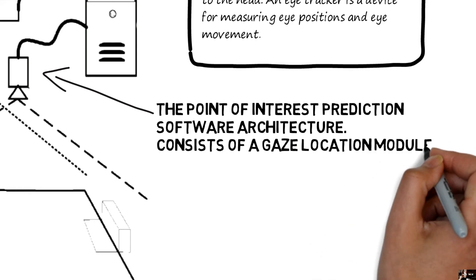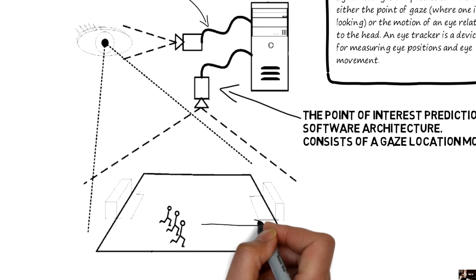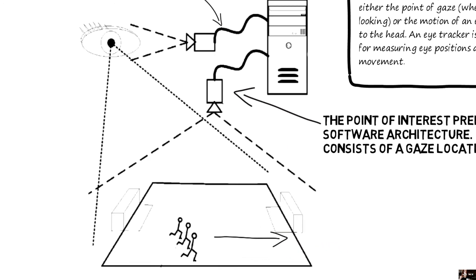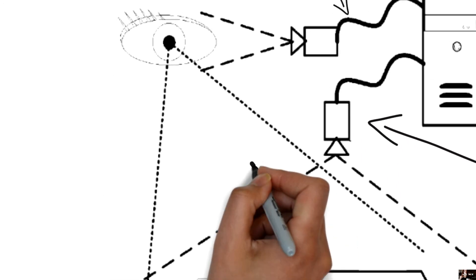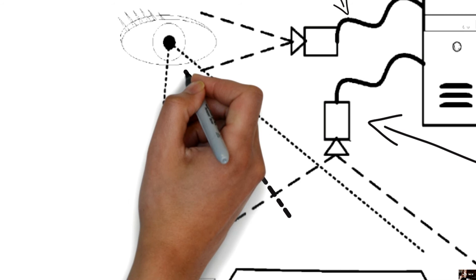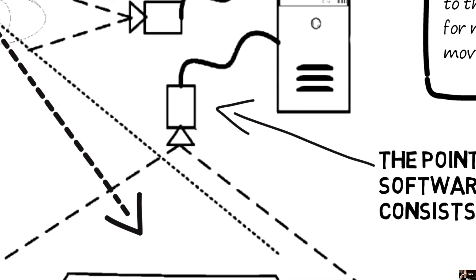It consists of a gaze location module. Now if the point of interest, aka the players, moves forward, then the camera will also move in a specific direction based on the direction of the AI programs.